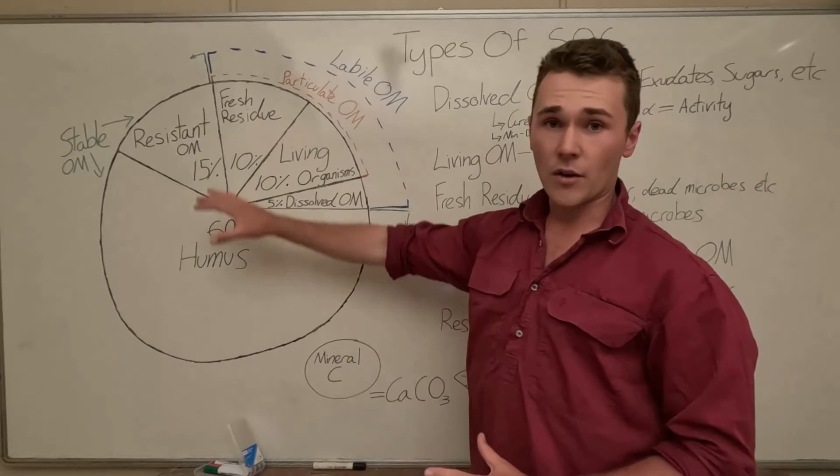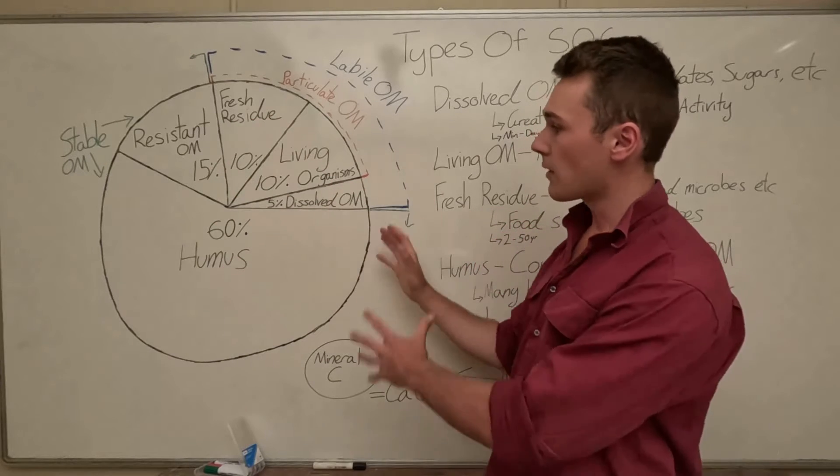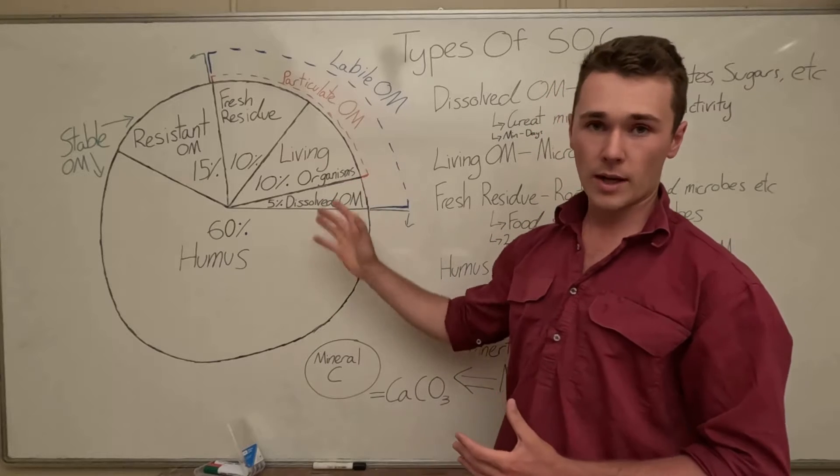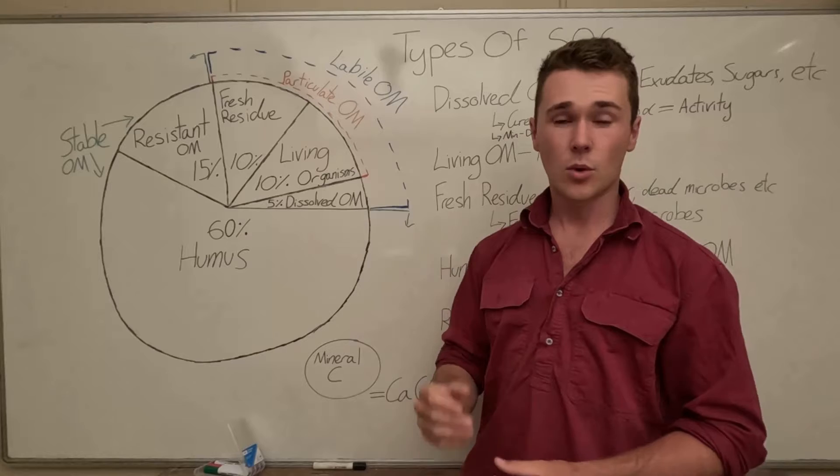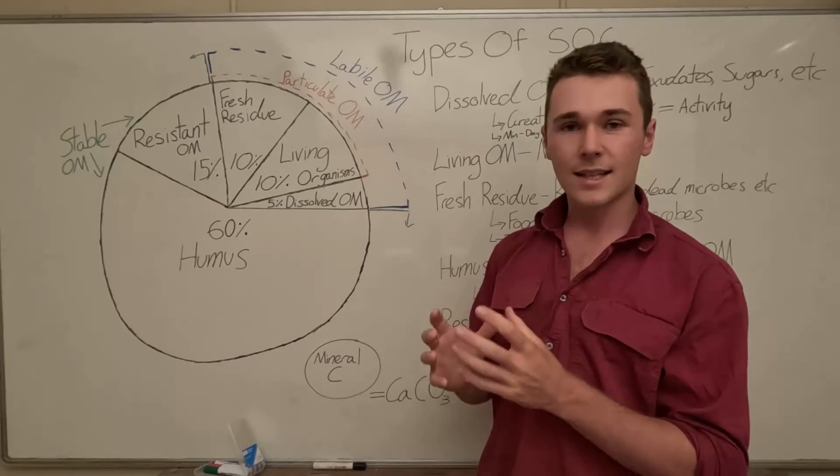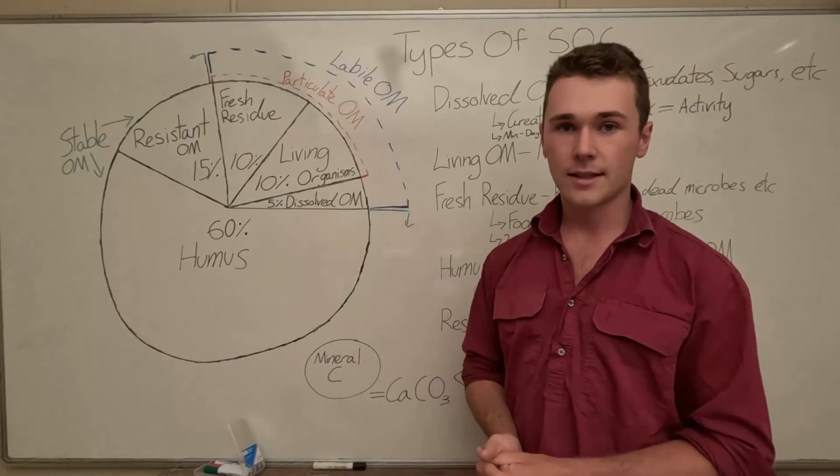So again this only makes up five percent so it's a very small amount but very important for microbial activity. So the more dissolved organic matter we have the more food there is available or quick food that is available for our microbes which means it's a good indicator for microbial activity as well.